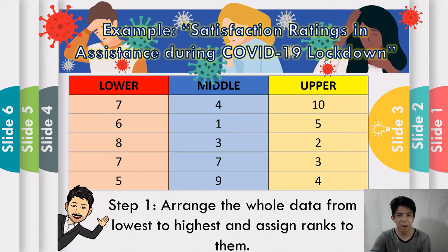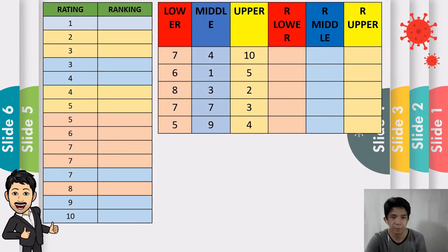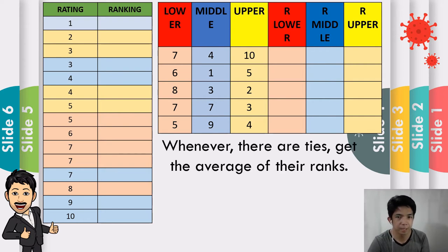Step 1: Arrange the whole data from lowest to highest and assign ranks to them. You will treat the data as one combined group. We are going to write all the ratings from lowest to highest. Remember, whenever there are ties, what you're going to do is get the average of their ranks — especially for the values at positions 3, 4, 5, and 7.